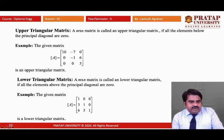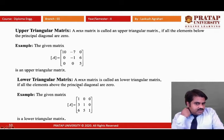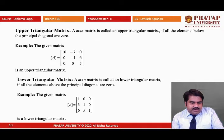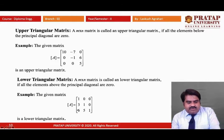Similarly, a lower triangular matrix: an M×N matrix is called a lower triangular matrix if all elements above the principal diagonal are zero. For example, a matrix A with three rows and three columns where the principal diagonal elements are 1, 1, and 1, and all elements above the principal diagonal are zero — this is a lower triangular matrix.